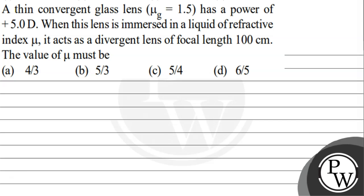Let's see the following question: a thin convergent glass lens with refractive index μg = 1.5 has a power of +5 diopters. When this lens is immersed in a liquid of refractive index μ, it acts as a divergent lens of focal length 100 cm. The value of μ must be found.